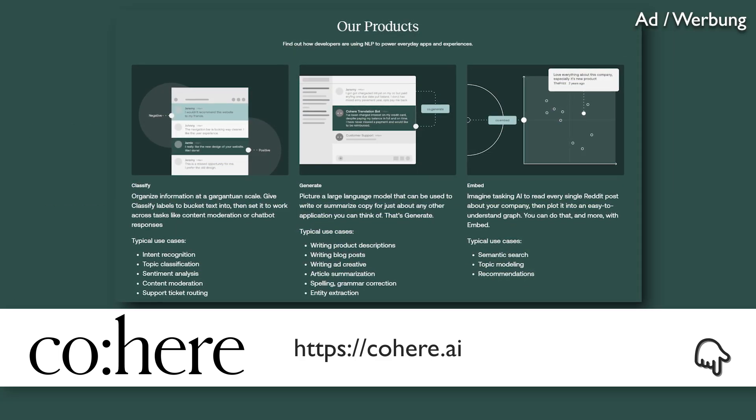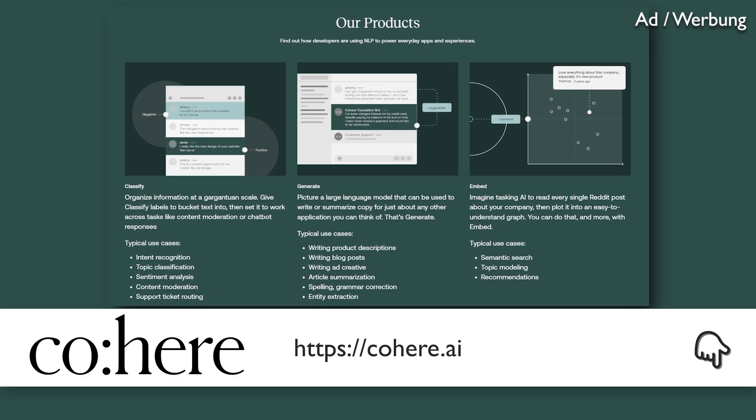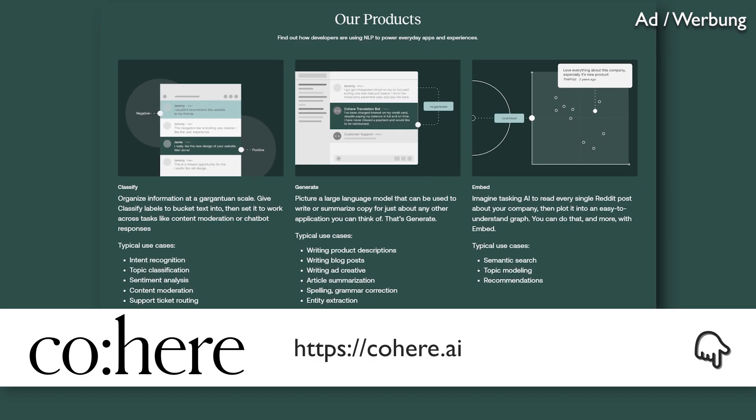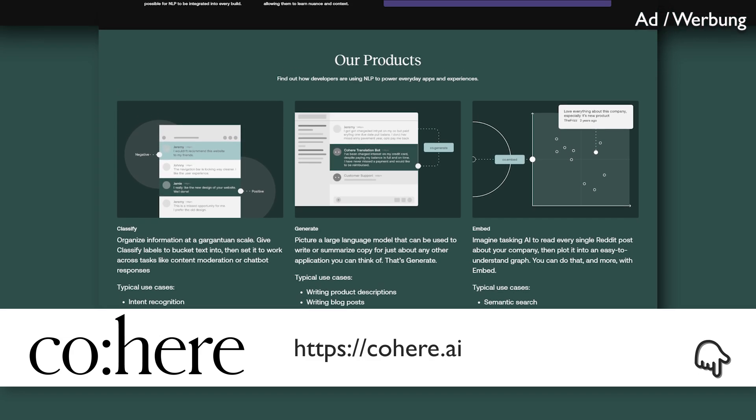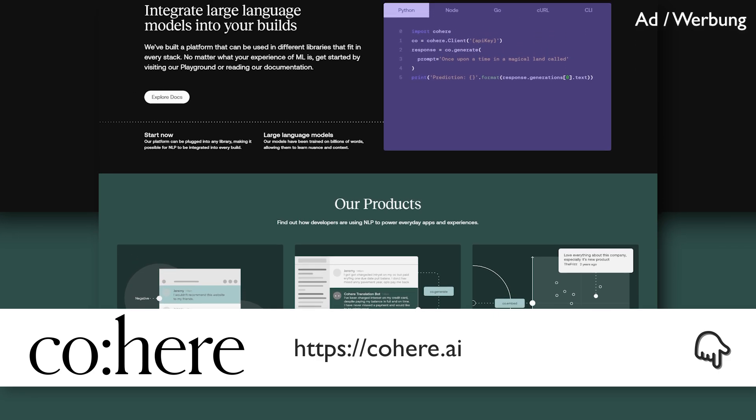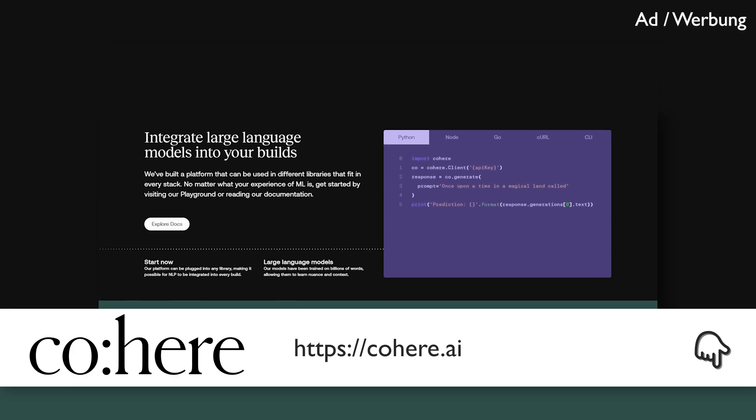It lets you use extremely capable language models to let them classify text for you or let them generate documents. Does this sound complicated? Fear not, because it is not at all. Cohere's specialty is to take the finest transformer-based models like GPT and BERT and let them do the heavy work for you under the hood.